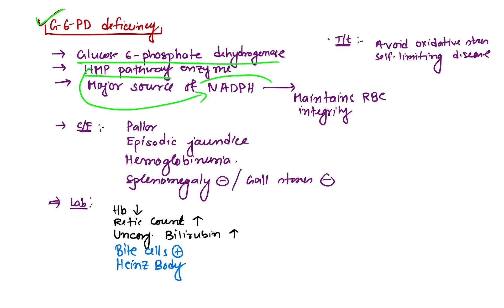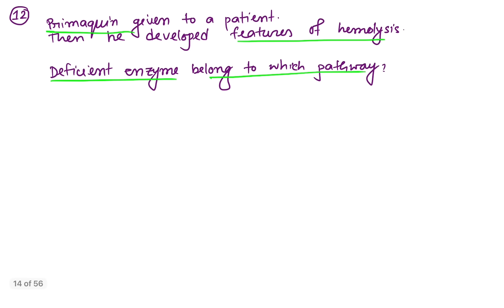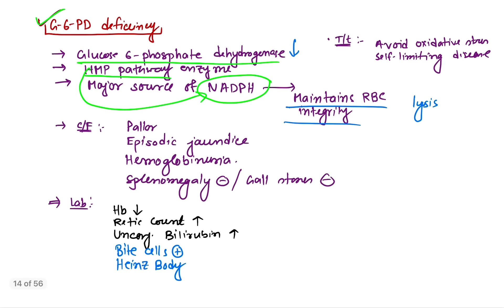The HMP pathway is the major source of NADPH, which maintains the integrity of RBCs by preventing hemolysis. When glucose-6-phosphate dehydrogenase is deficient, this causes increased lysis of RBCs — hemolysis. So this is G6PD deficiency, and the deficient enzyme belongs to the HMP shunt pathway. Clinical features include pallor, episodic jaundice, and hemoglobinuria with oxidative stress.